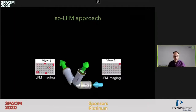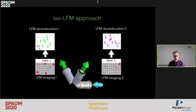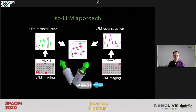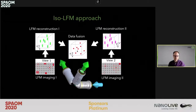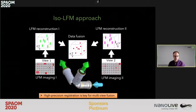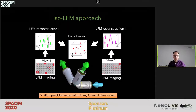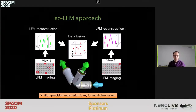Here step by step is how our ISO-LFM approach works: we illuminate the sample, record two independent light fields on two cameras, reconstruct those light fields, then rotate one of the two volumes to bring it into the same reference system. Then we run a dual-view data fusion algorithm to obtain images of higher resolution. It is key that the two volumes are registered with very high precision to enable this data fusion at the highest possible quality.